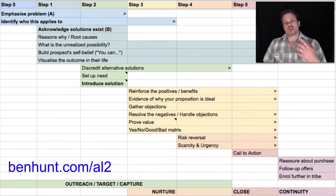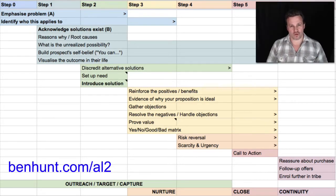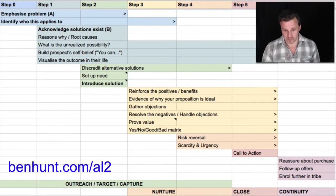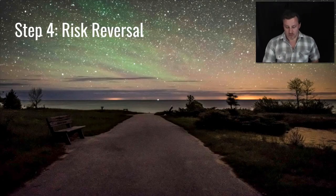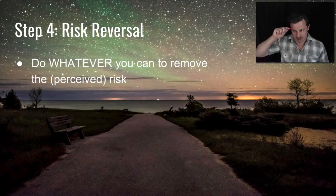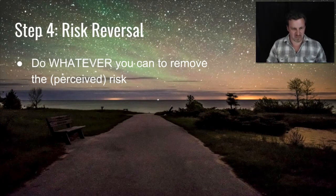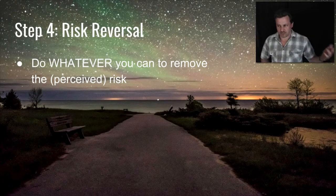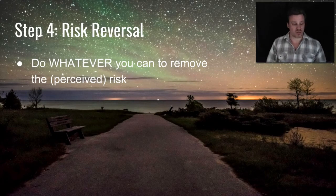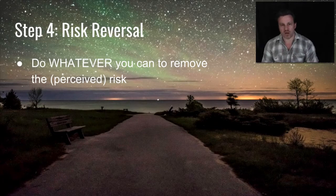Moving on to step four: now somebody should be pretty much convinced of the value and what it's going to do for them. They might be thinking 'yes, this is good for me.' What we need to do is get them to step five where they're actually ready to buy. Two things: first is risk reversal. The risk in somebody's head can be a reason for them to say no. Risks are: it's a lot of money, I might lose my money, I may not complete it, how do I know if it works, how can I trust — all these kinds of negatives. Write them all down, then even if it sounds nuts, what could you do to make that risk disappear?